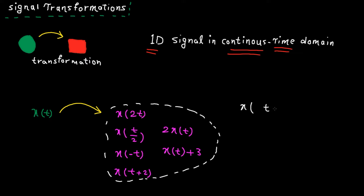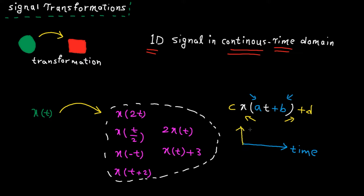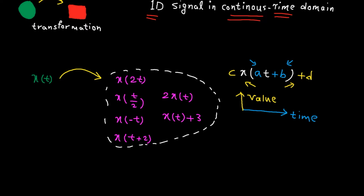In general, when we change something inside the parentheses, the signal is changed in the time direction. On the other hand, when we change something outside the parentheses, the signal is changed in the y or value direction. If you don't understand what I just said, don't worry about it. I will make this crystal clear by the end of this tutorial, I promise.